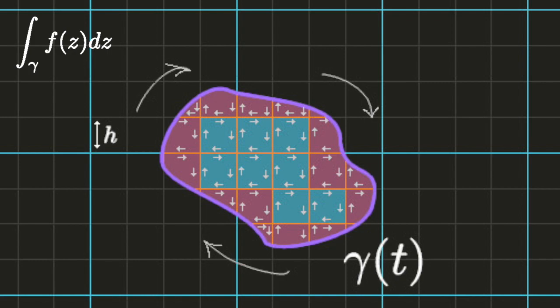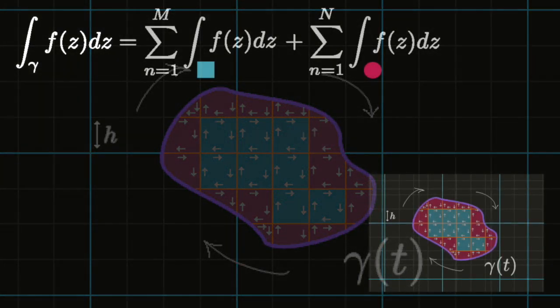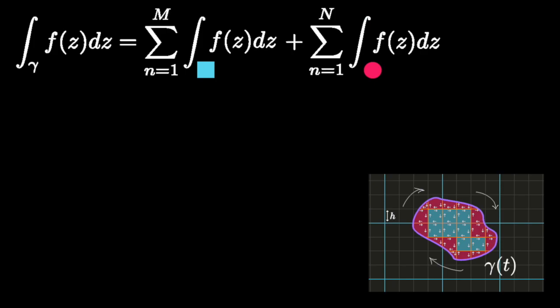Let's color all of the interior regions blue, and anything that contains part of the curve red. The length of the side of one of the squares in the inner blue region is equal to the grid spacing h. Since the spacing between the grid lines is an arbitrary choice, we can make the side length of the blue squares as small as we want. The integral of f around the curve is equal to the sum of the integrals around the red and blue regions.